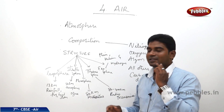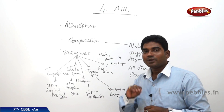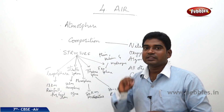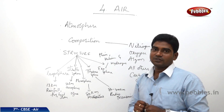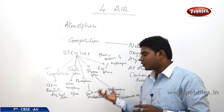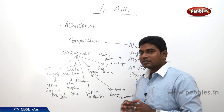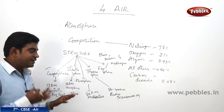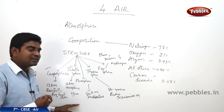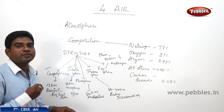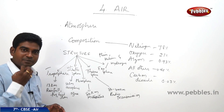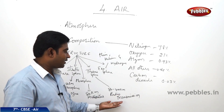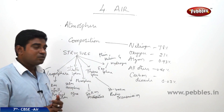Coming to the third layer, the mesosphere, which extends up to 80 kilometers. Here, meteoroids, as soon as they enter into the mesosphere, burn up themselves. Coming to the fourth layer, the thermosphere, extending from 80 to 400 kilometers. It consists of radioactive elements, and radio waves can be transmitted back through this layer. That is how we are able to listen to radio FM and other channels.